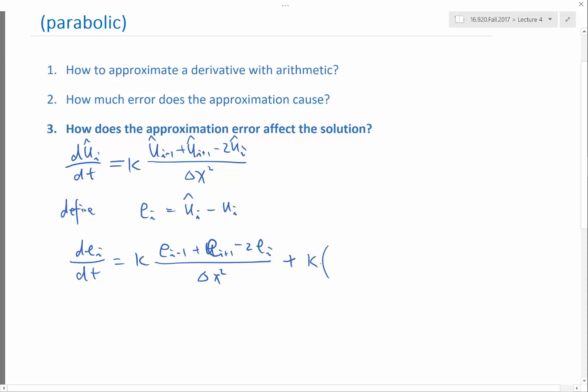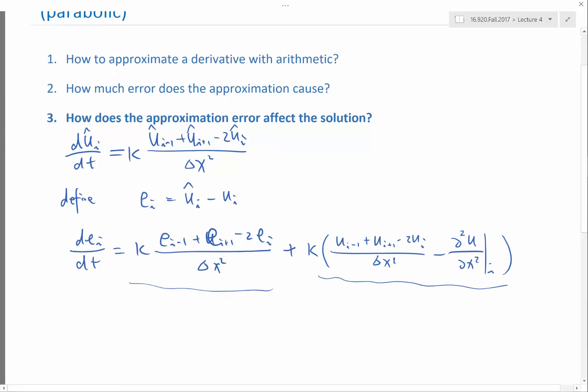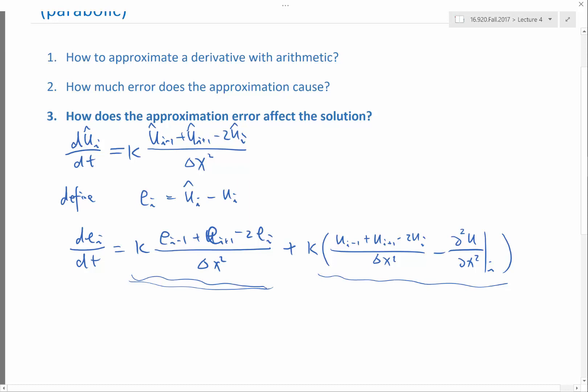Plus the truncation error, plus the difference between the finite difference operator - ui minus 1 plus ui plus 1 minus 2 ui - the finite difference approximation of the second order derivative minus the true differential operator evaluated at xi. So this is the truncation error analysis, the approximation error analysis we did before. And this is the stability portion of the problem.